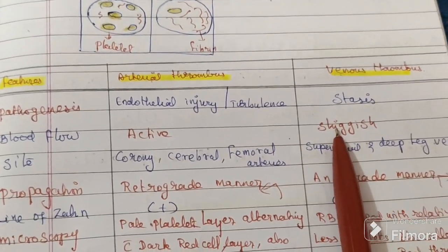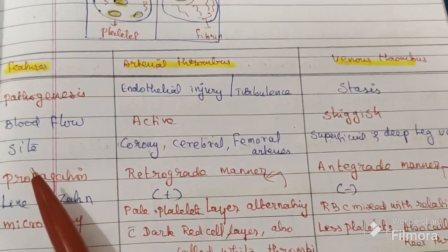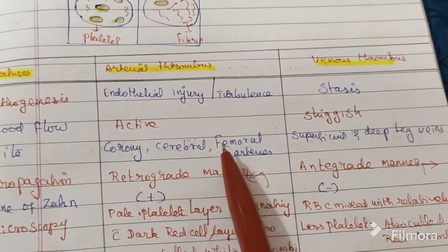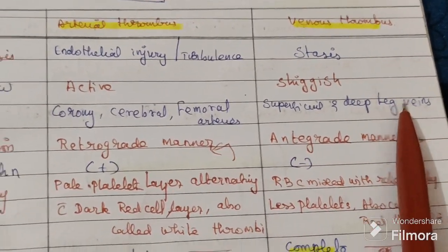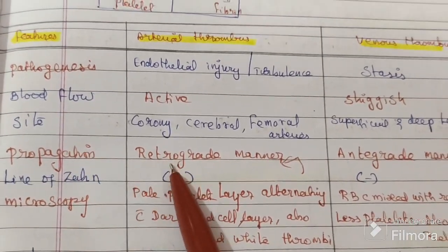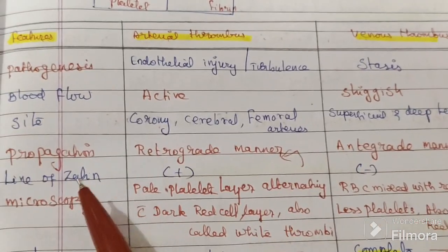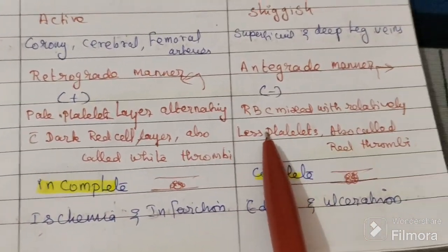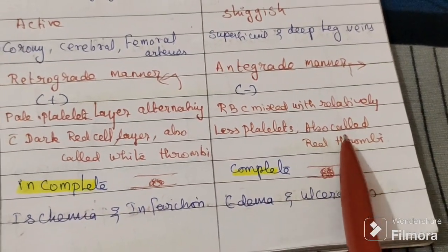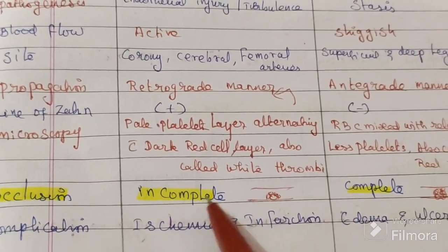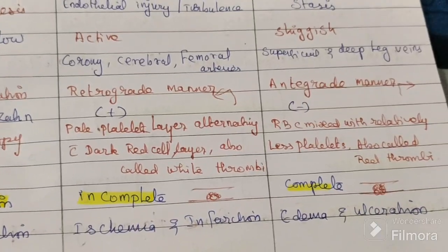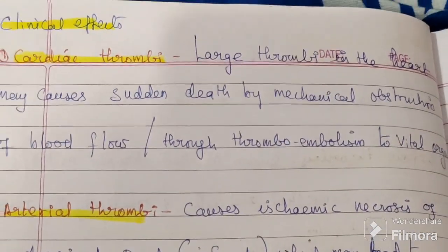For venous thrombosis, altered blood flow is the key factor — turbulence falls under arterial thrombus, and stasis falls under venous thrombus. Blood flow is normal in arterial and reduced in venous. Sites affected: arterial thrombus affects coronary, cerebral, and femoral arteries; venous thrombus affects superficial and deep leg veins. Lines of Zahn are present in arterial and absent in venous. Microscopically, arterial shows pale platelet layers alternating with red cell layers; venous shows RBCs mixed with few platelets — a red thrombus.